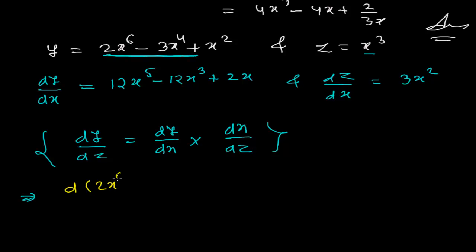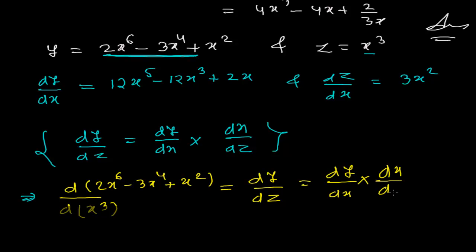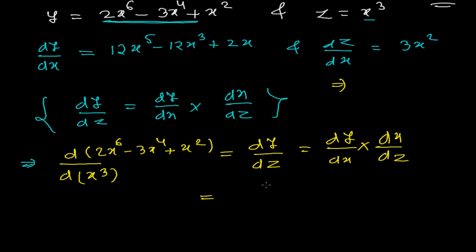Right. Now same formula I'm going to use here. So what I'll get? d(2x^6 - 3x^4 + x^2)/d(x^3) is actually dy/dz, which is dy/dx times dx/dz. So we know dz/dx here, but here we need dx/dz, so from here just do the reciprocal. It's better to write here.